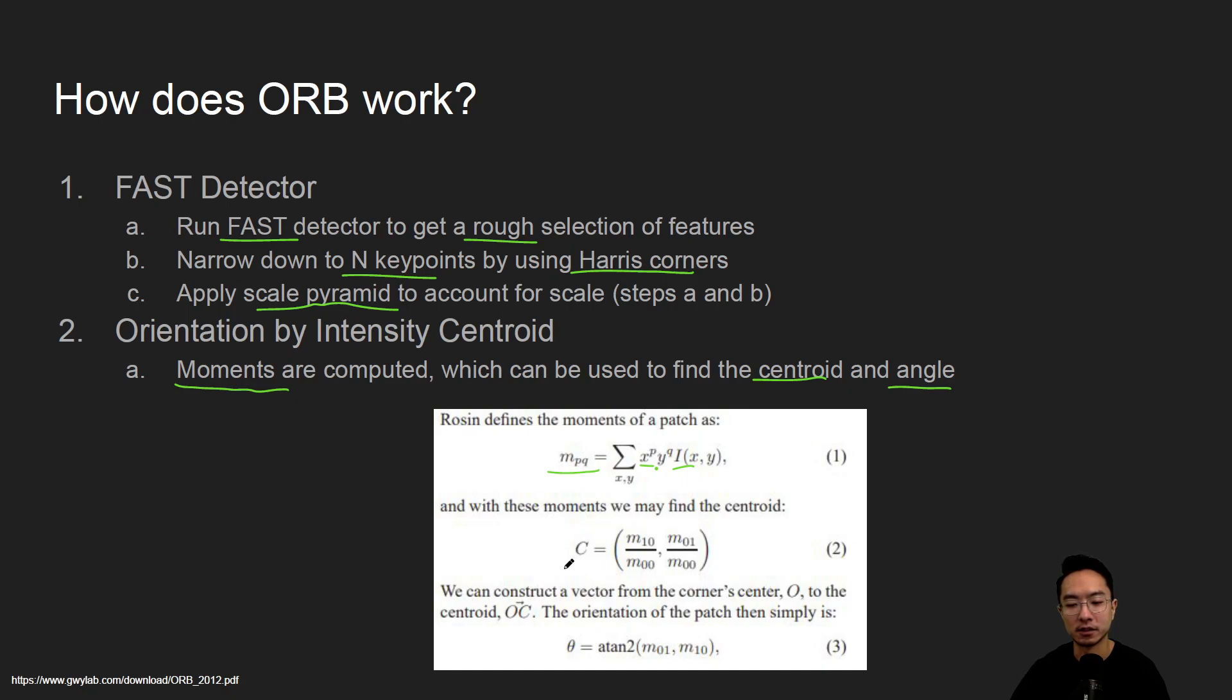And the centroid is just the ratios of the different moments that we calculated. And the angle is just arctan 2 of the moments that are in the 0, 1 and 1, 0 components.